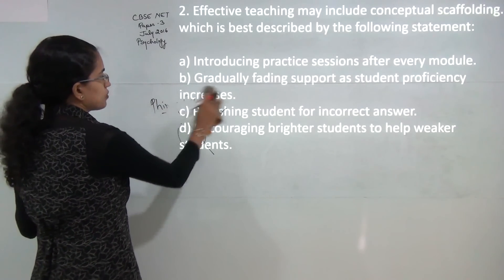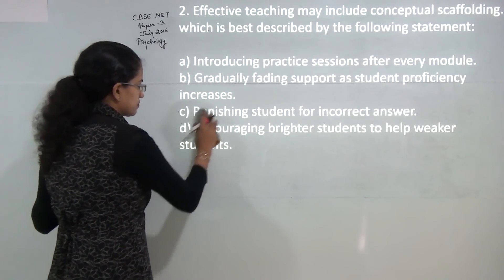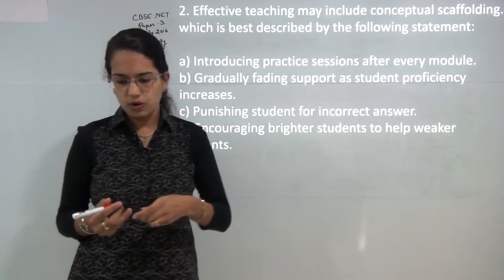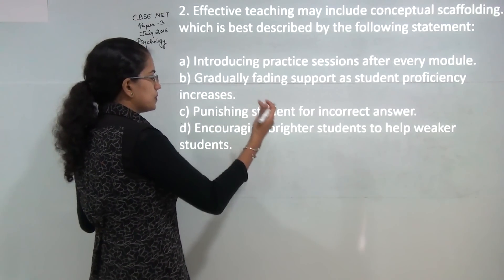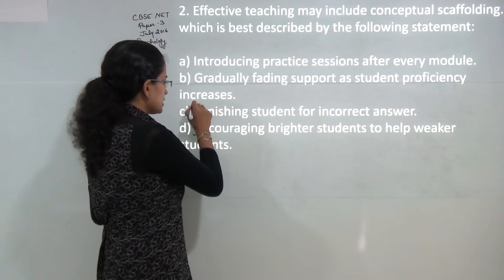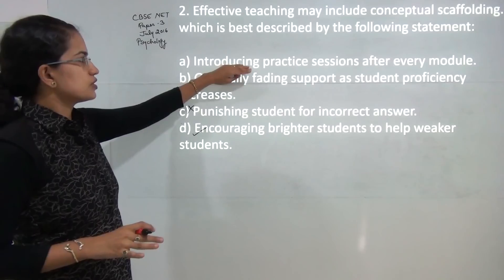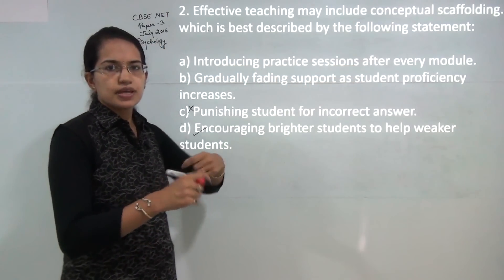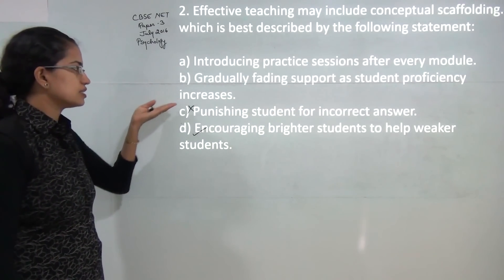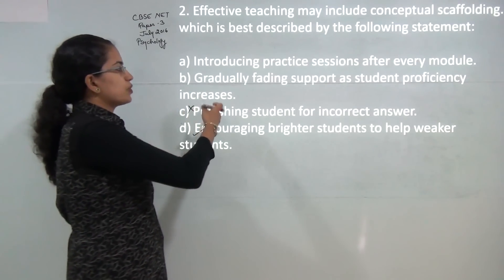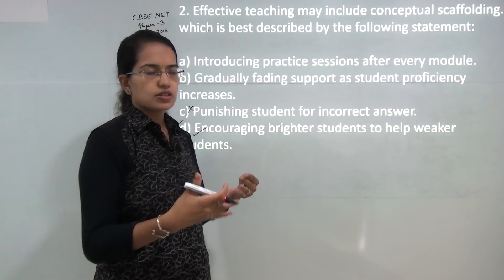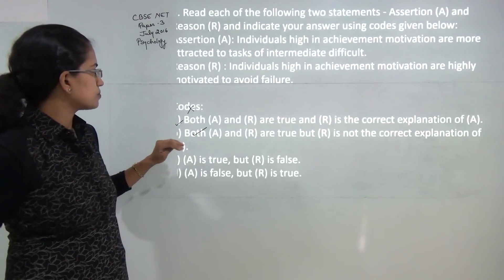Next question: types of scaffolding. There are four types of scaffolding. Here we are concerned with conceptual scaffolding, which talks about what we learn and the key concepts which guide your learning. Encouraging brighter students to help weaker students would be the correct answer here because punishing in any case won't be a correct answer. So the correct answer would be D.